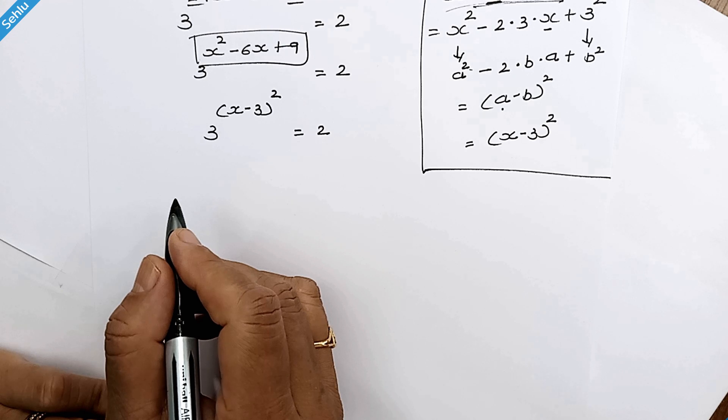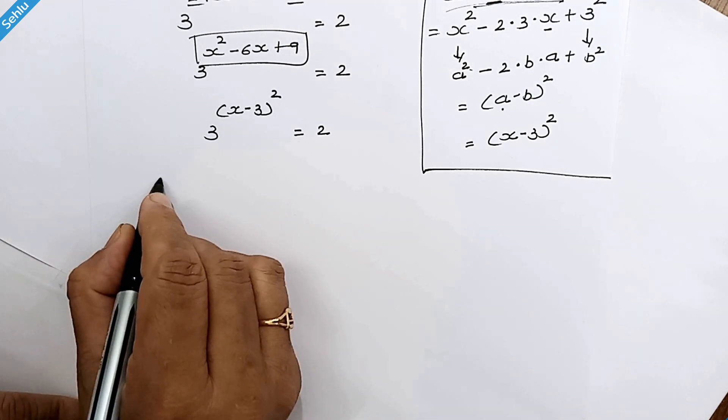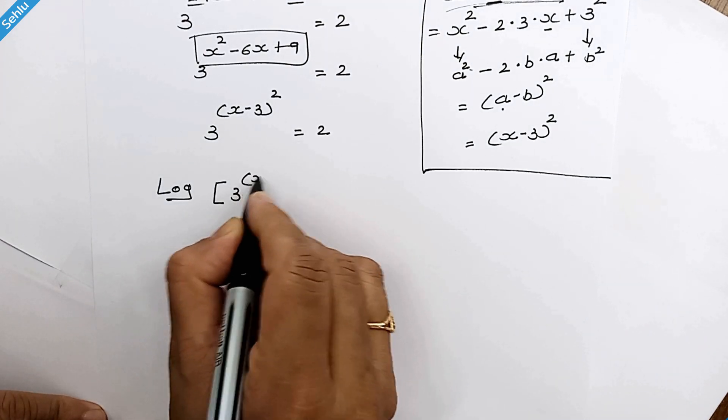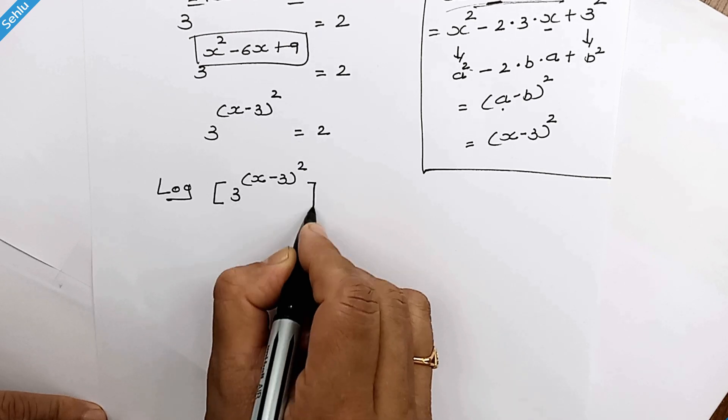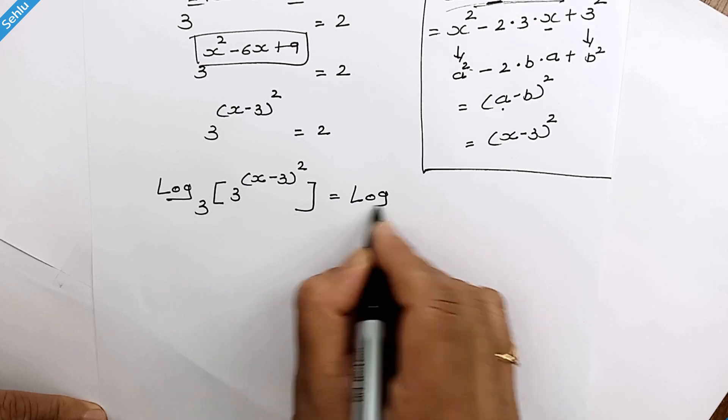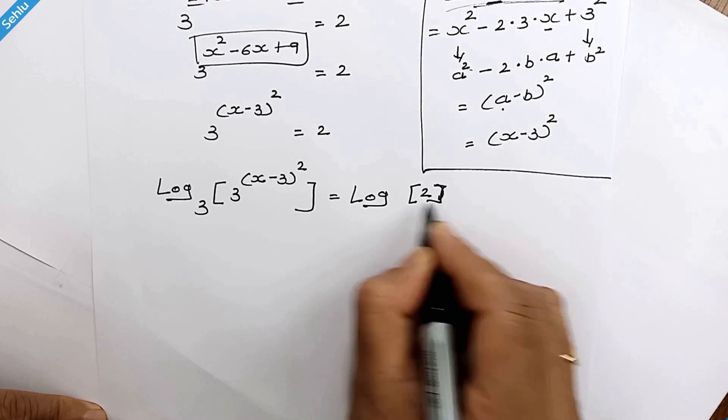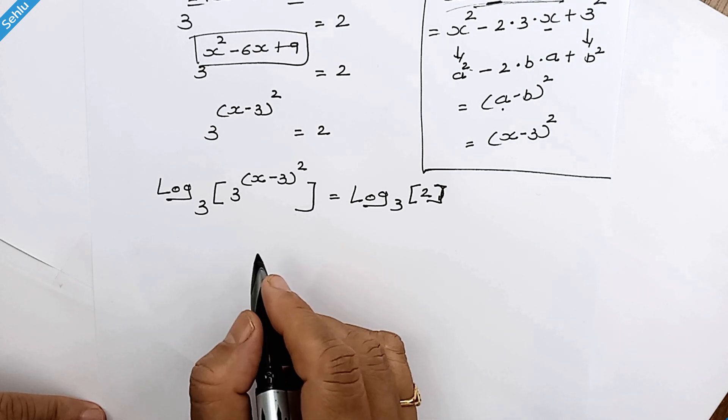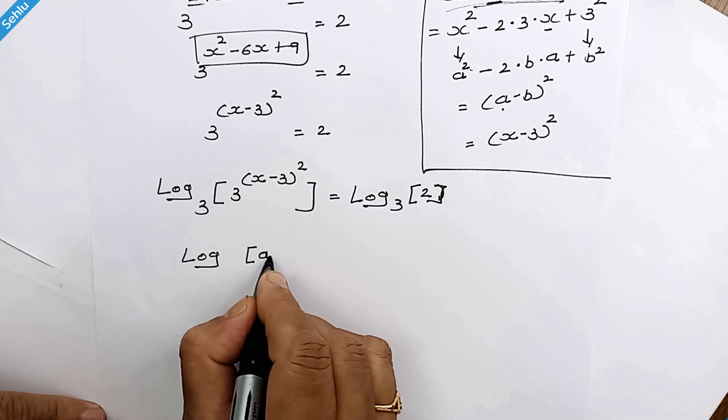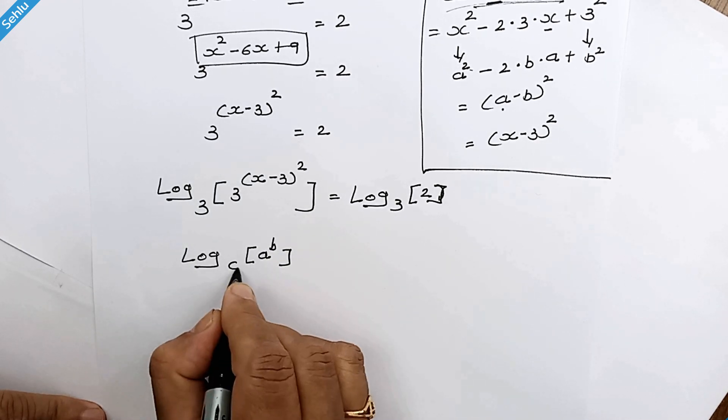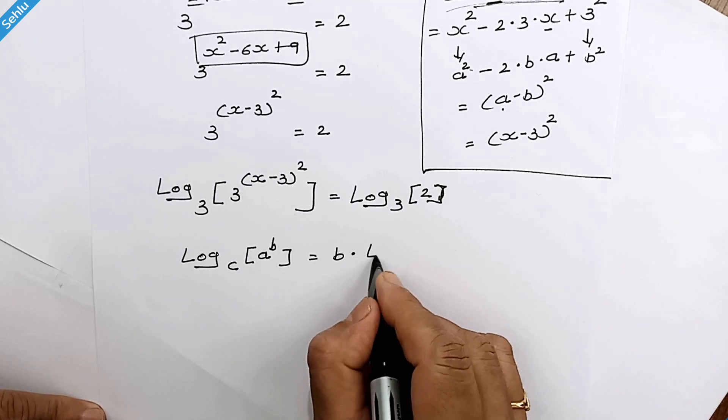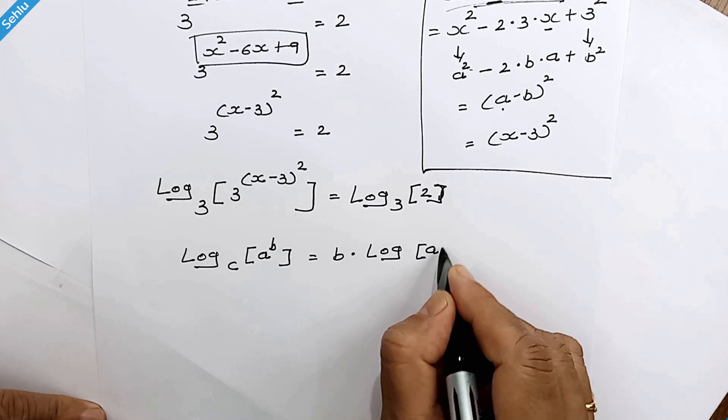Here we will take log base 3 of both sides. Log base 3 of 3^((x-3)²) equals log base 3 of 2. Now let's recall a rule: when we have log base c of a^b, it can be b times log base c of a.